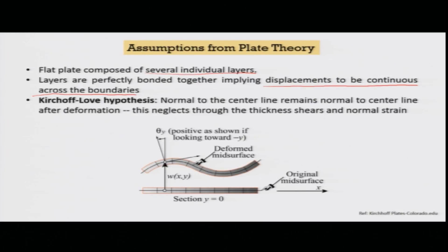Assuming we are talking about thin plates, when a bending deformation occurs, the normal to the center line — the geometric midline — remains straight. This section has undergone bending, but the normal remains straight and also remains normal at this point with respect to the neutral axis. We also neglect through-the-thickness shear and the normal strain. That deformation through the thickness is neglected because the plate is very thin, and through-the-thickness shear is also neglected.